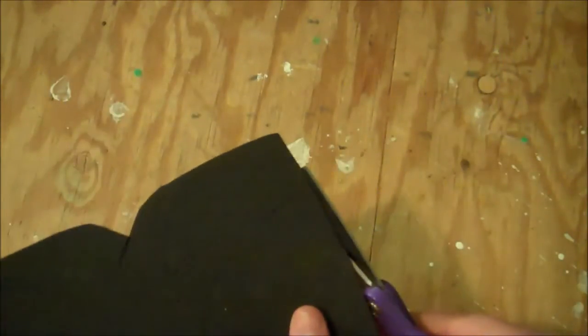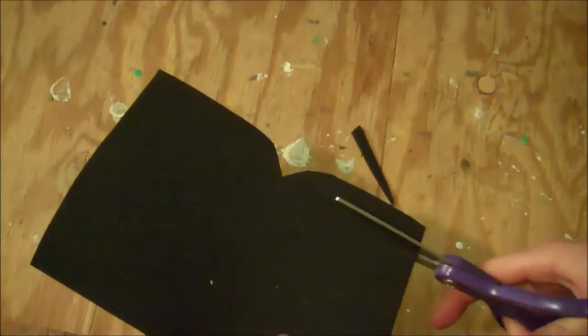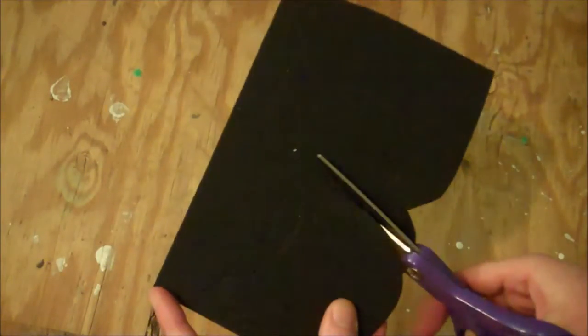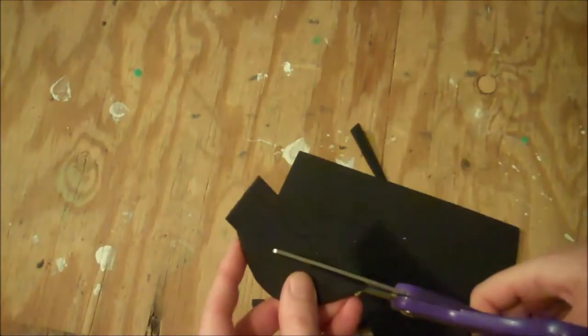Then take a pair of scissors and carefully cut out both of the wings out of the black foam, cardstock, or construction paper, whatever you're using.